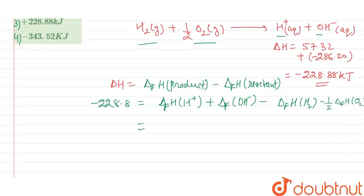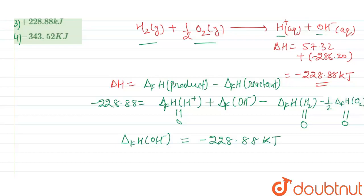Now here the heat of formation of H plus aqueous is given as zero, and the heat of formation of H2 gas which is in its standard natural state will also be zero, and O2 is also present in its standard natural state, so heat of formation of O2 is also zero. This means the heat of formation of OH minus ions will be equal to minus 228.88 kilojoules.